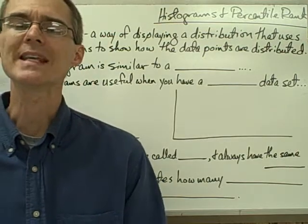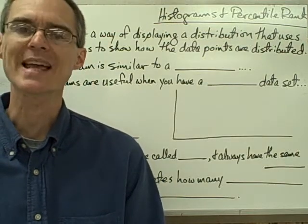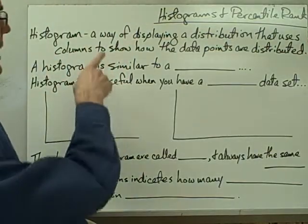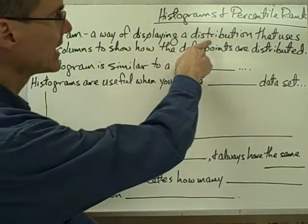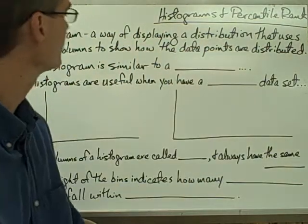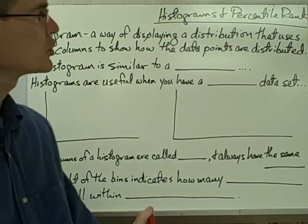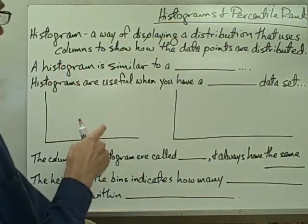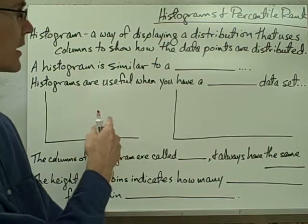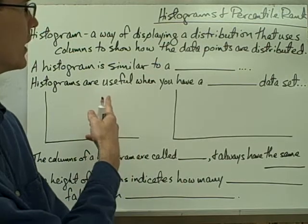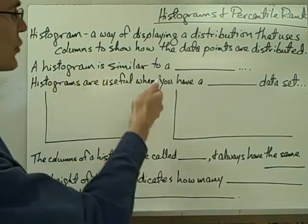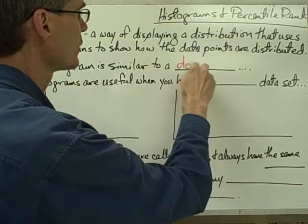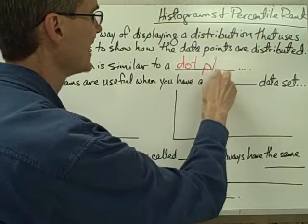This video is on histograms and percentile rank. A histogram is a way of displaying a distribution that uses columns to show how data points are distributed. We've already looked at a couple of different ways of looking at distributions. A histogram is very similar to one of those ways we've already talked about: a dot plot.